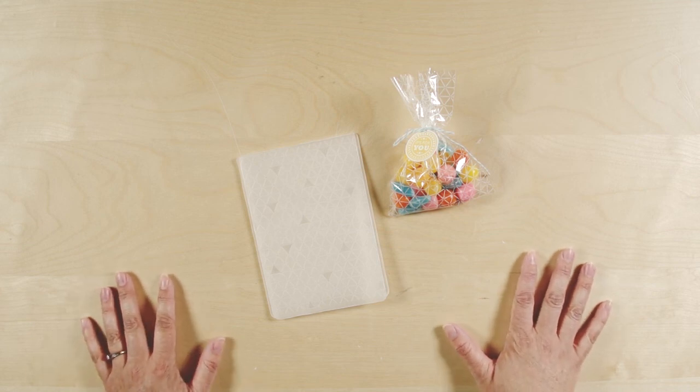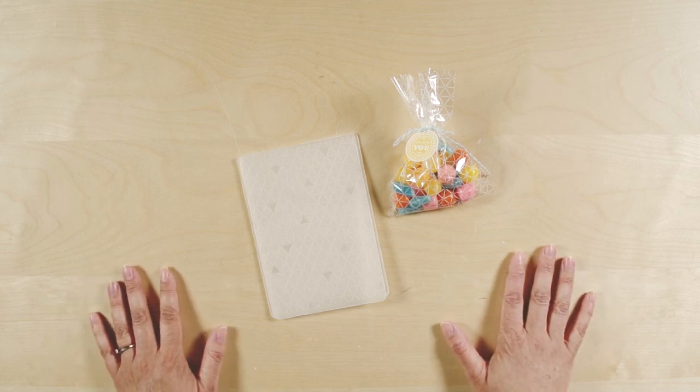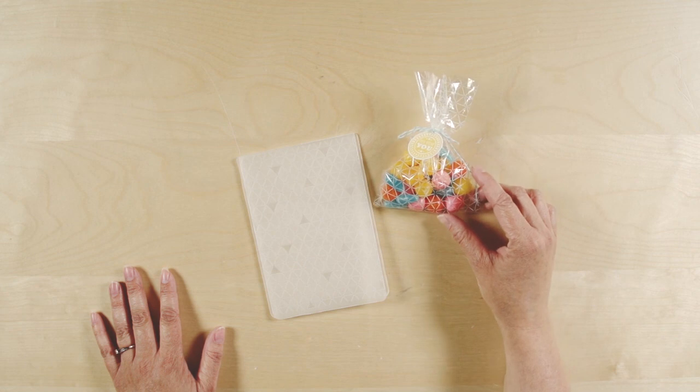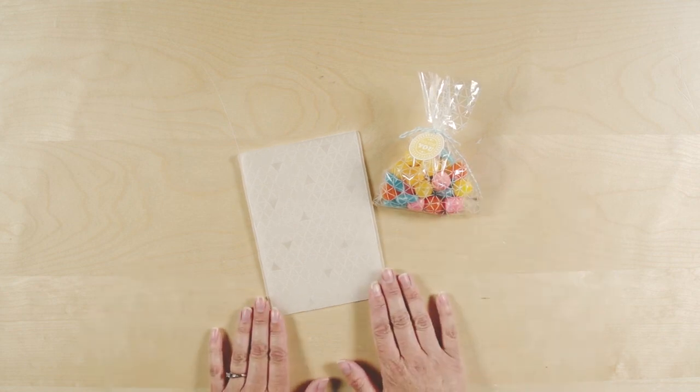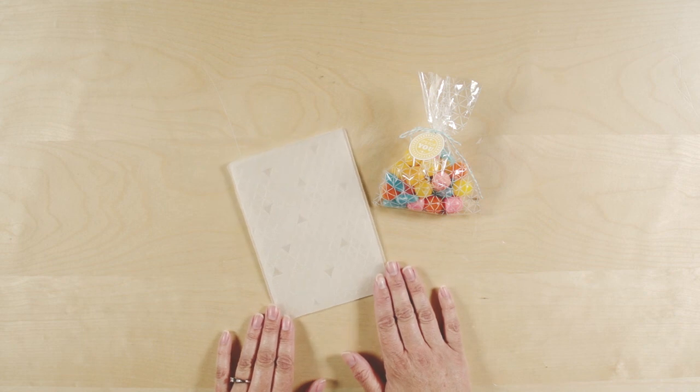Hello! Today I am going to show you how you can make your own custom cello bags using the Textured Impressions Embossing Folders. Today I'm using the Tiny Triangles Embossing Folder.